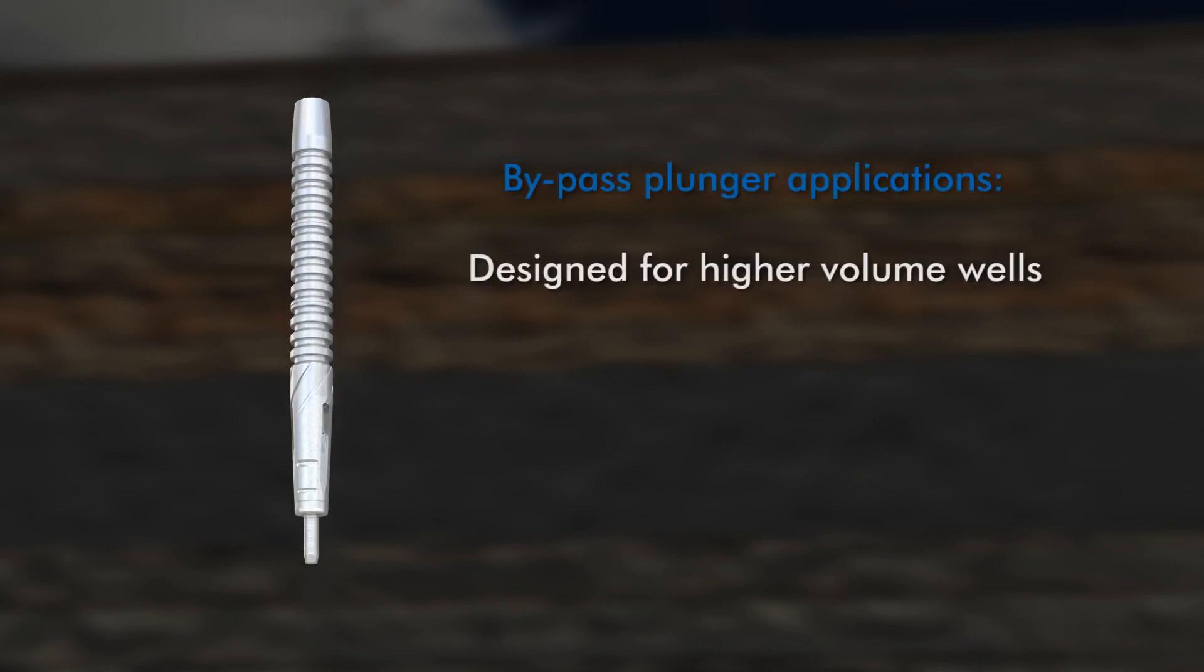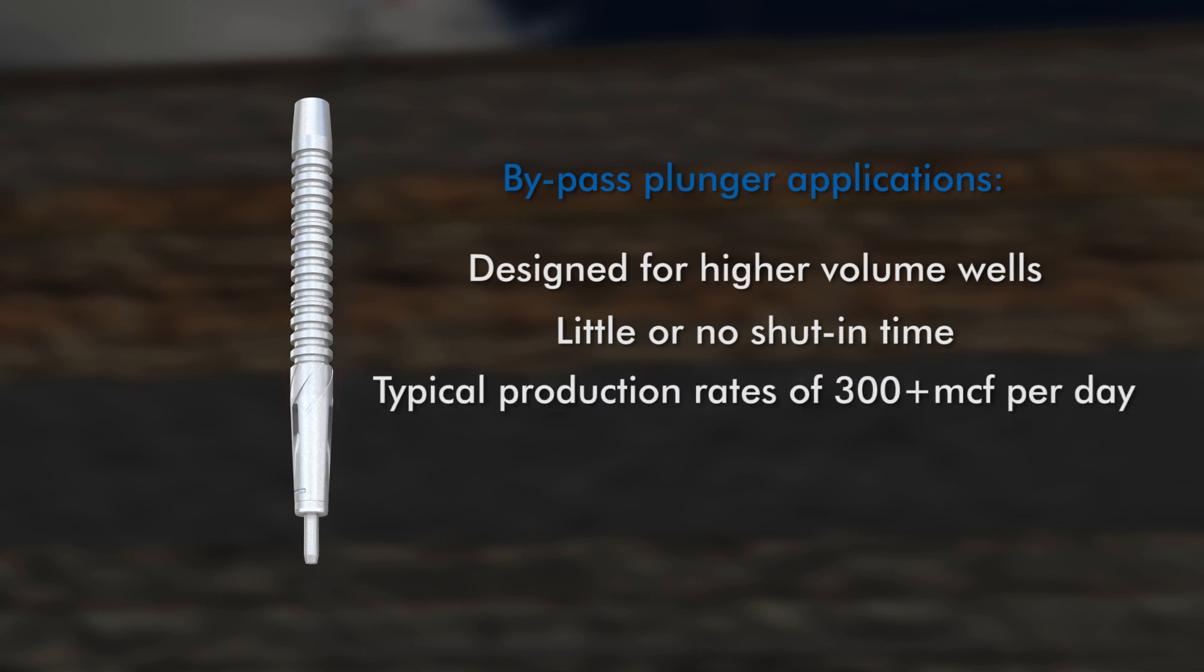The FlowCo bypass plunger is designed for higher volume wells and requires little or no shut-in time. Typical production rates for continuous flow plunger applications are wells that can produce on average 300 plus mcf per day and fluid rates from 5 to 700 barrels per day, depending on tubing size.